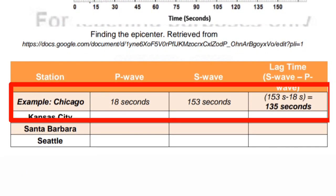For example, Chicago: P wave, 18 seconds. S wave, 153 seconds. To compute for the lag time, what we need to do is simply subtract P wave from S wave. So, if we have 153 seconds minus 18 seconds, we have a lag time of 135 seconds. Now, do the same for the other three seismic stations.